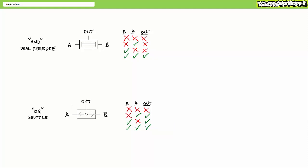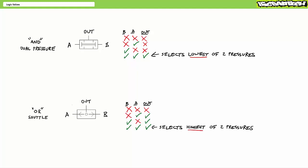Beyond the logical operation of these two valves, they also exhibit pressure selection. When both air pilot A and B are present for an AND valve, the AND valve selects the lowest of the two pressures. Whereas when both air pilot A and B are present for an OR valve, it selects the highest of the two pressures.